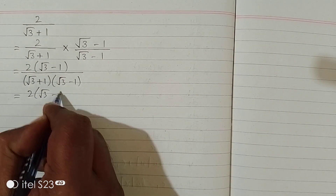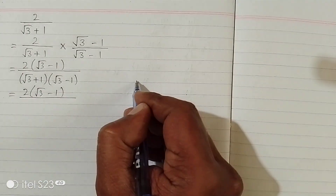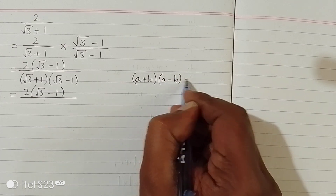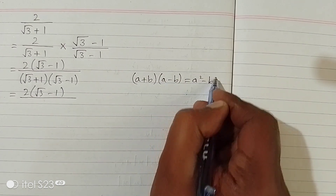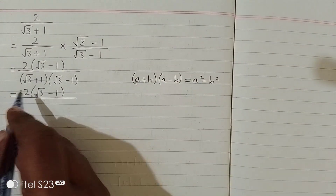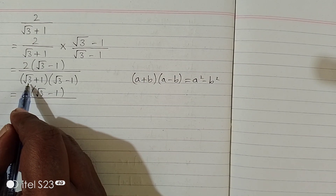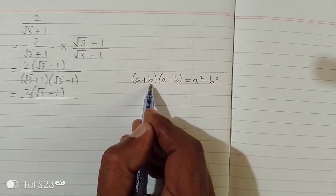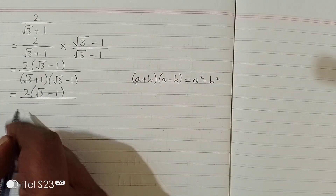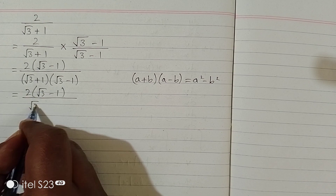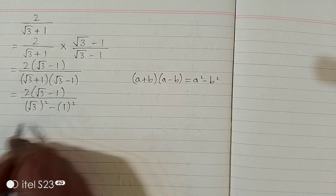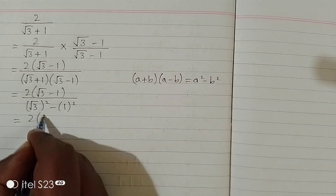Now we have 2 times (square root of 3 minus 1), and in the denominator we can apply the formula (a + b)(a - b) = a² - b². We can see that we have square root of 3 in place of a and 1 in place of b, so we apply this formula and get square root of 3 squared minus 1 squared.